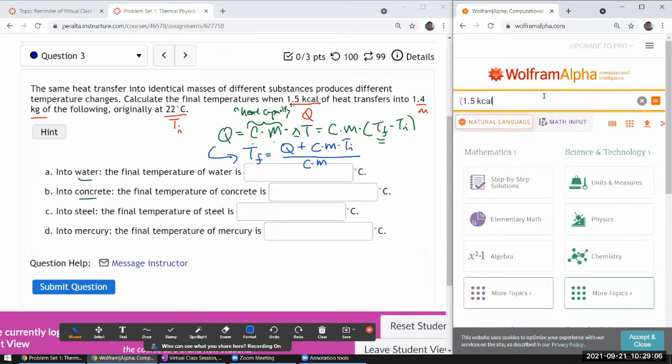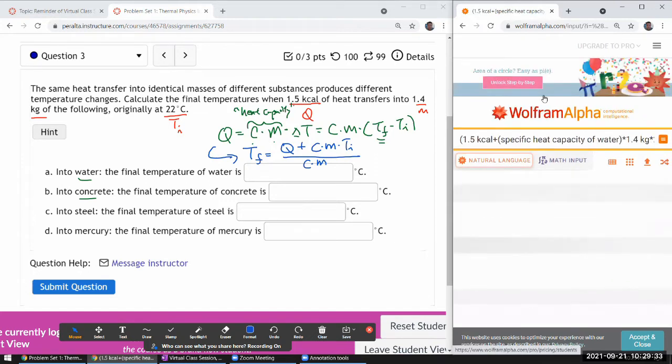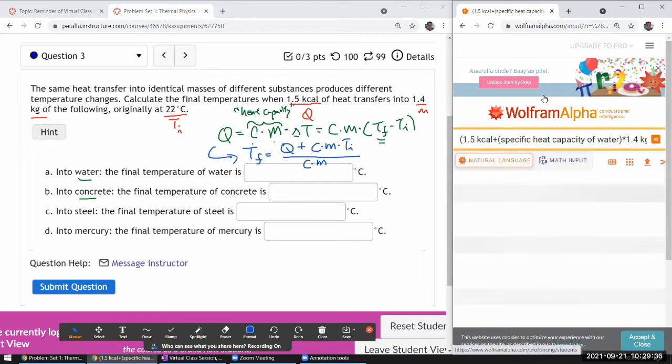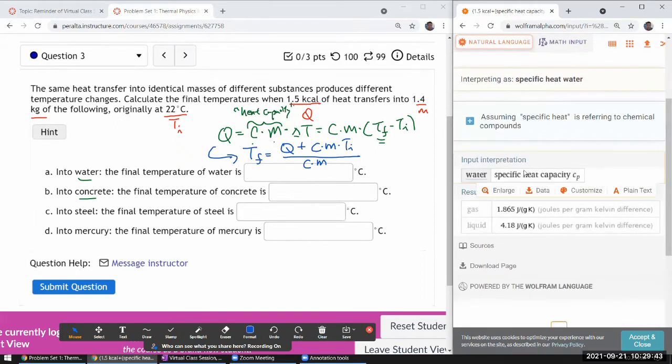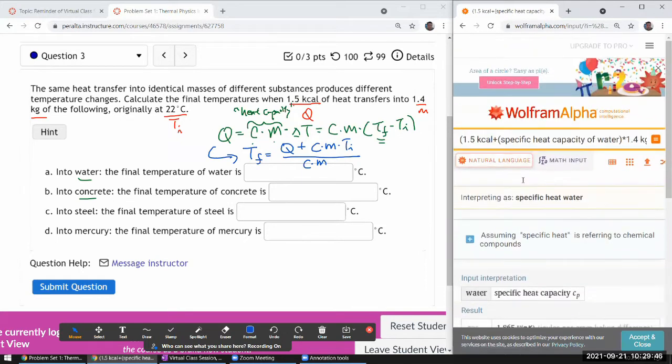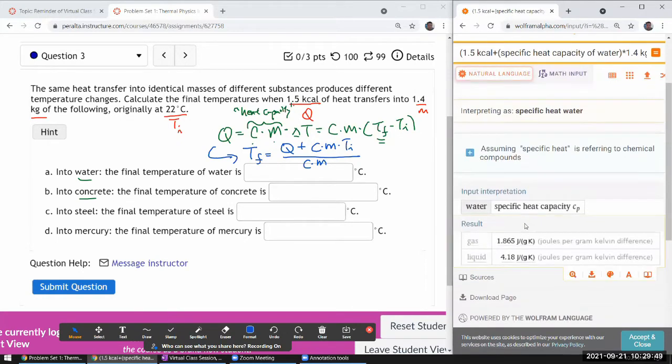So 1.5 kilocalorie plus, let me try this, specific heat capacity of water. The nice thing about Wolfram Alpha is it'll tell you how it interpreted your input. So you can see, before imbuing any meaning to its answer, you can see if it's understood correctly. Okay, all right, it doesn't do this combination very well.